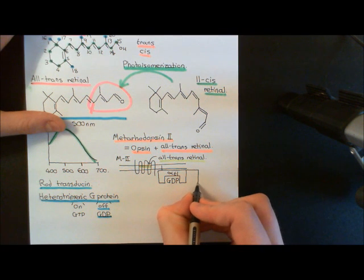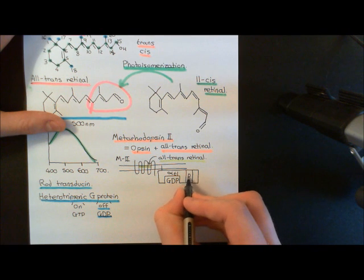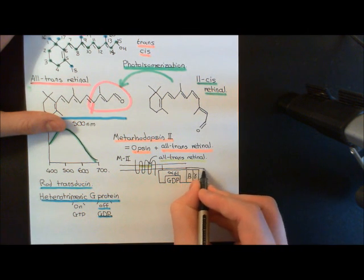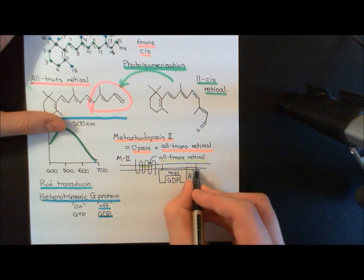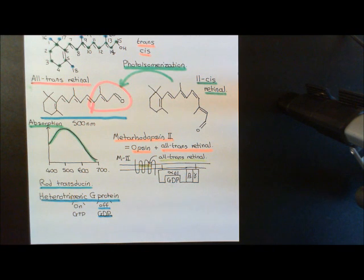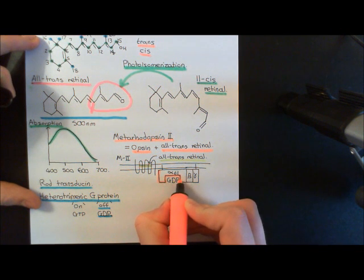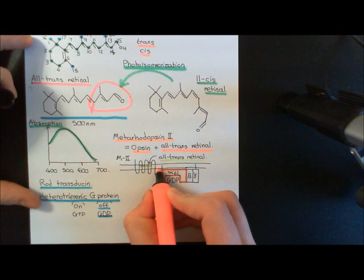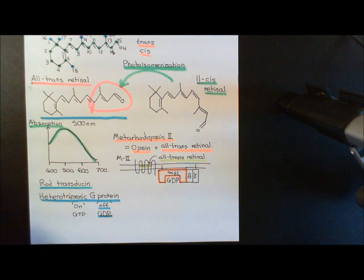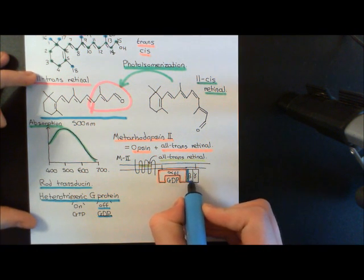In the off state, with GDP bound, the alpha subunit will be bound to the beta-gamma subunit, which is made up of the beta and gamma subunits. The gamma subunit also has a lipid moiety attached to it to implant it in the phospholipid bilayer. The alpha-T1 subunit is specific to rod transducin, currently in the off state with GDP bound to it, and here we have the beta and gamma subunits.